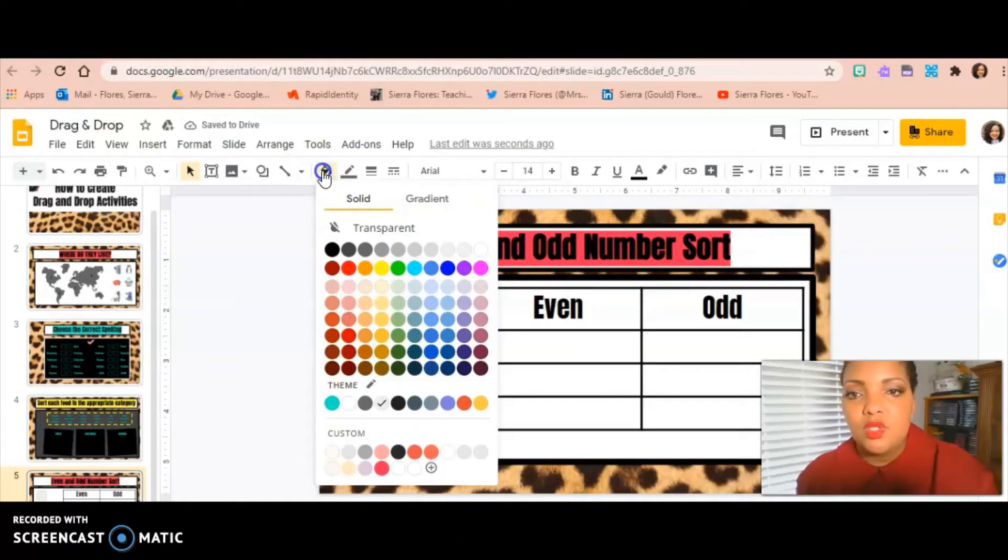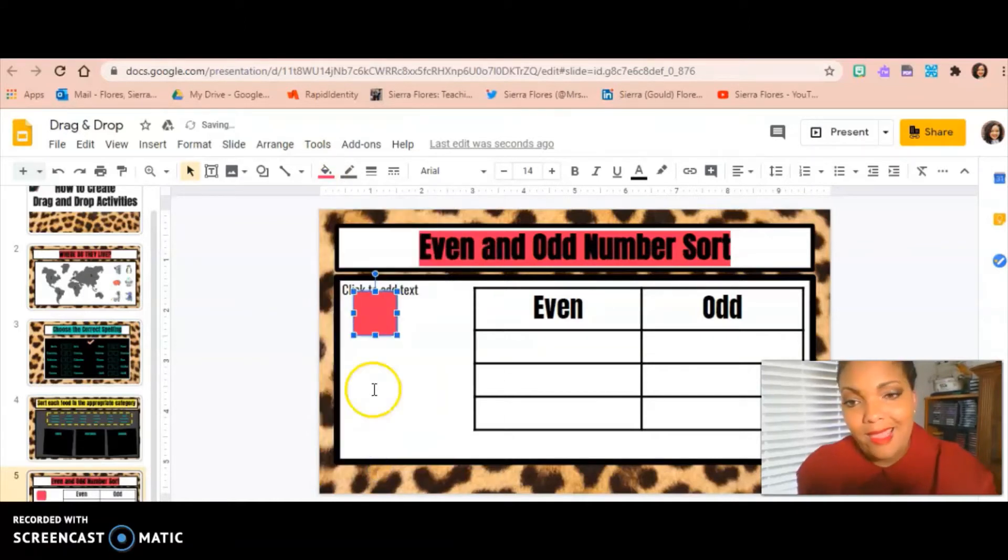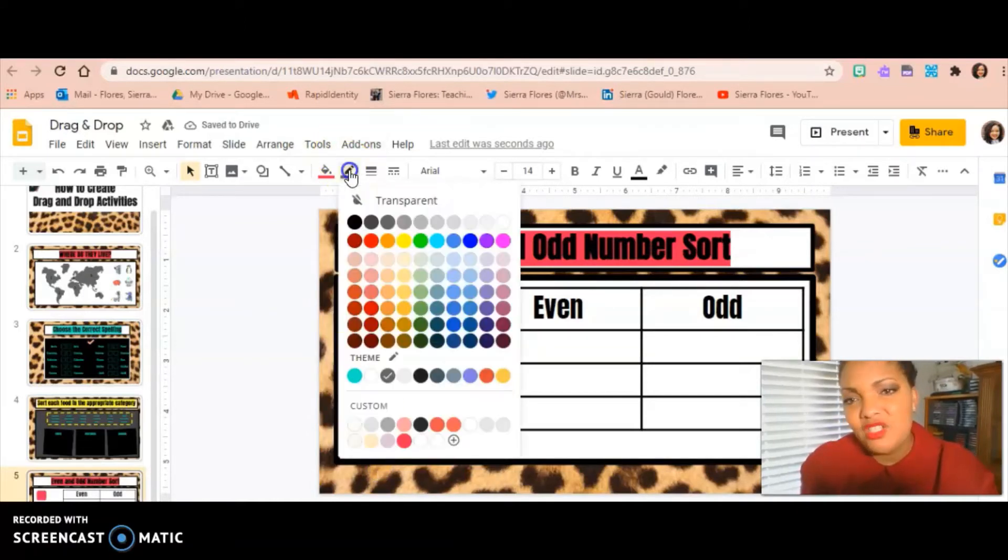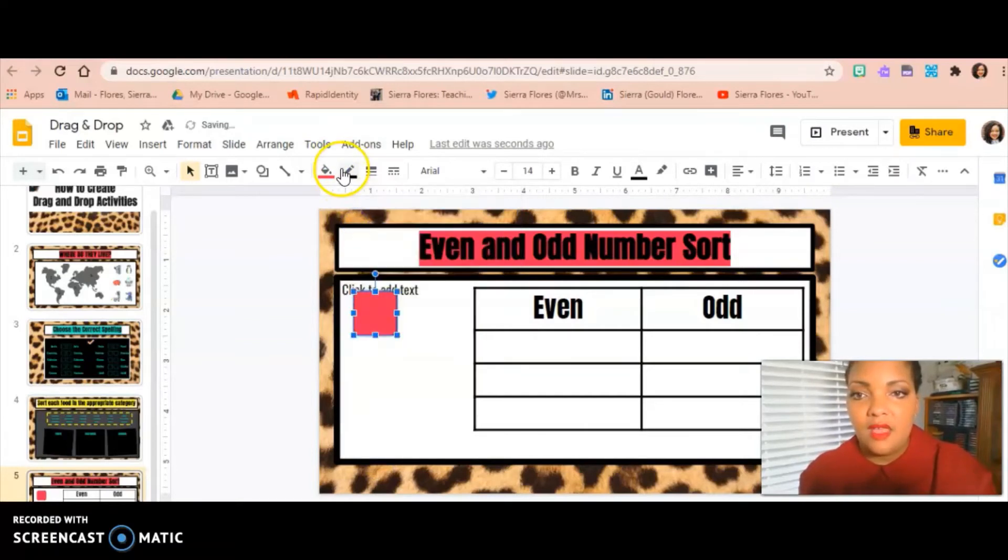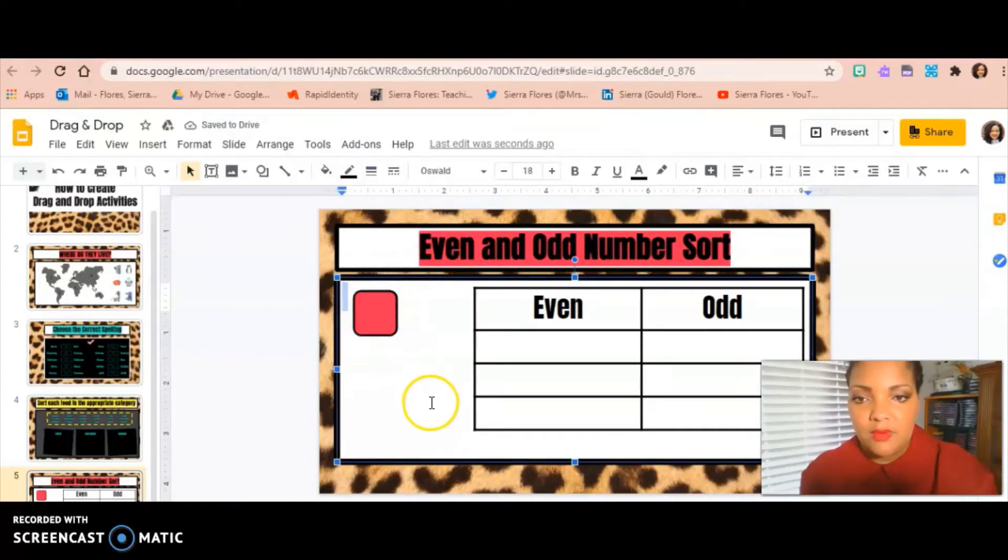I'm going to fill it pink. I like that color. It's a nice shade. I enjoy it. And I'm going to make the line black and then make it four point. There we go. And so now I see what it looks like.